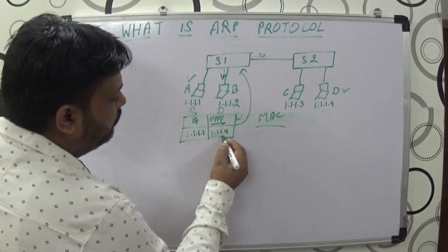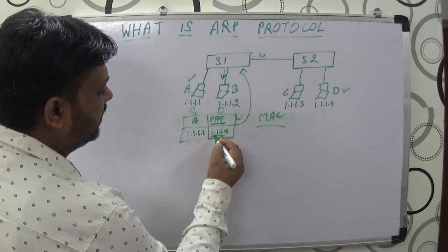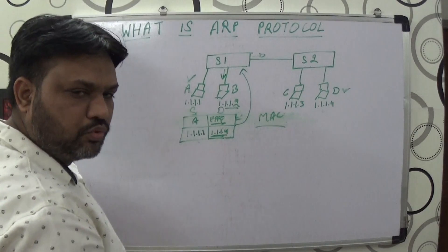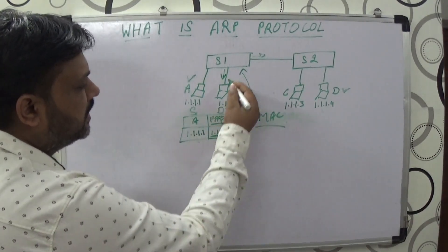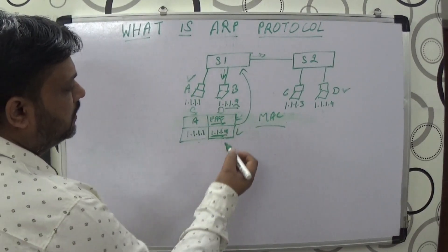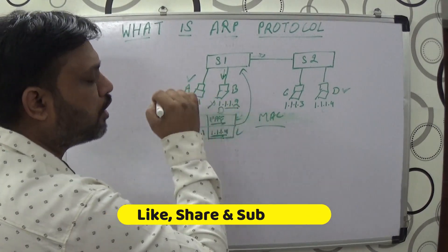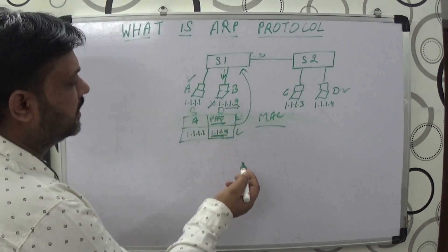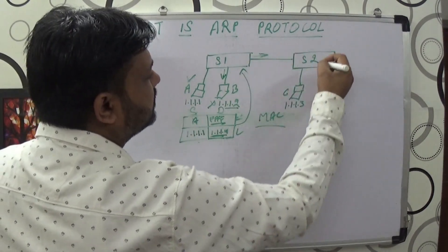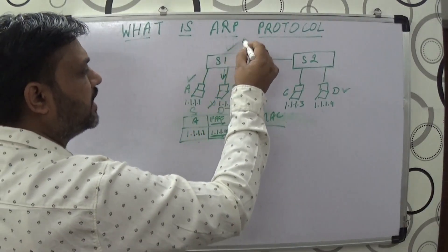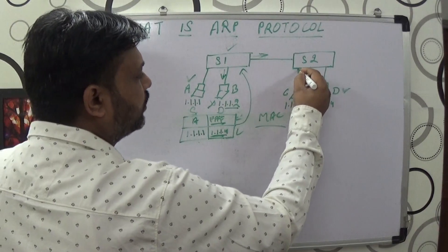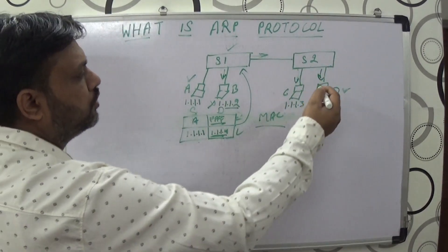Computer B then identifies the IP address — it reads 1.1.1.4 and checks its own IP address which is 1.1.1.2. Since it doesn't match, it drops the packet. Meanwhile, the same frame reaches switch number two. Switch number two does the same thing — it creates multiple copies and sends them to all ports connected to it, forwarding the frame to computer C and computer D.